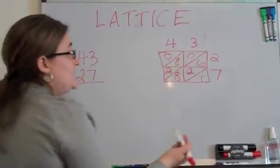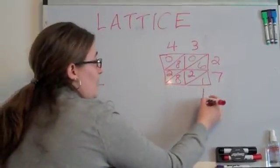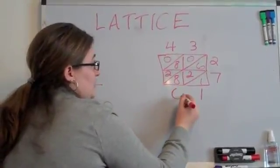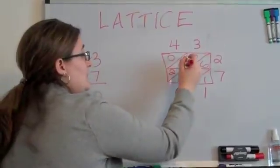So now I have to add up my place values. In the ones column, I have a 1. In the tens column, I have 16, so I put a 6 here and I carry the 1 into the hundreds place.